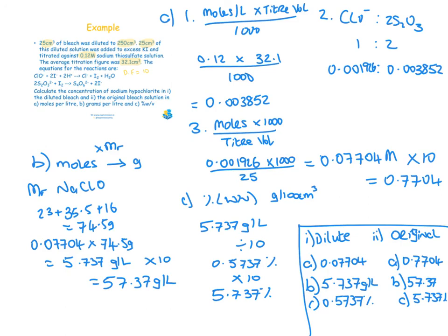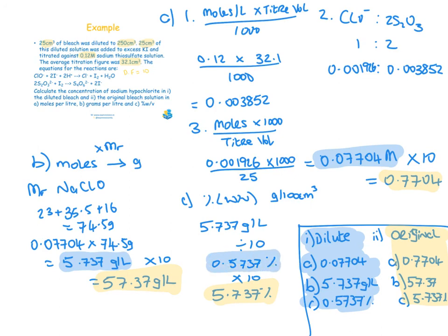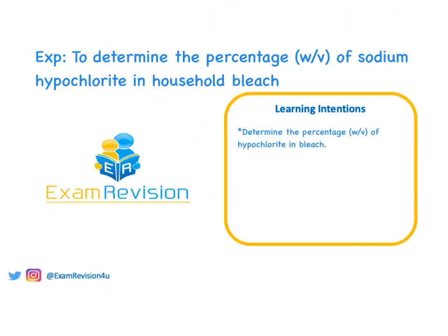To make the answers clear, the original bleach answers — moles per litre, grams per litre, and percentage weight per volume — are highlighted in orange, while the diluted bleach answers are highlighted in blue. Have a read over the learning intention to make sure you understand everything covered in this video.